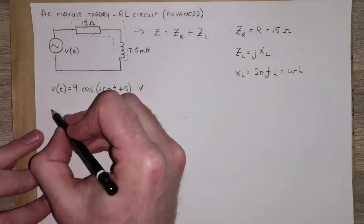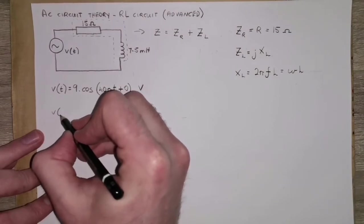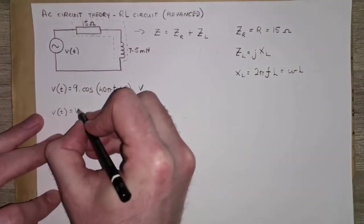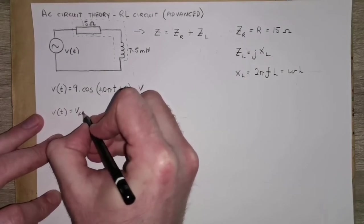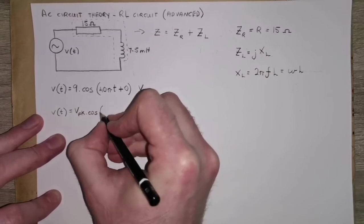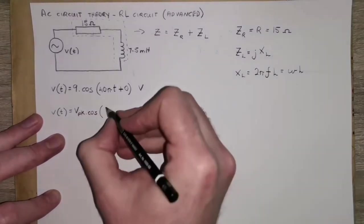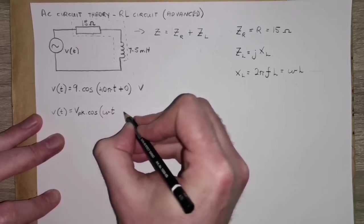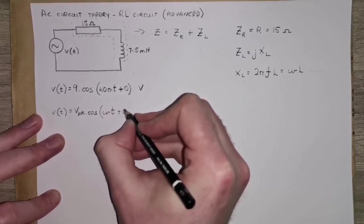And if you recall from our notes that this expression here is broken down into the peak value of our sine wave multiplied by the function, it can be sine or cosine, and the general form is omega t plus the phase.